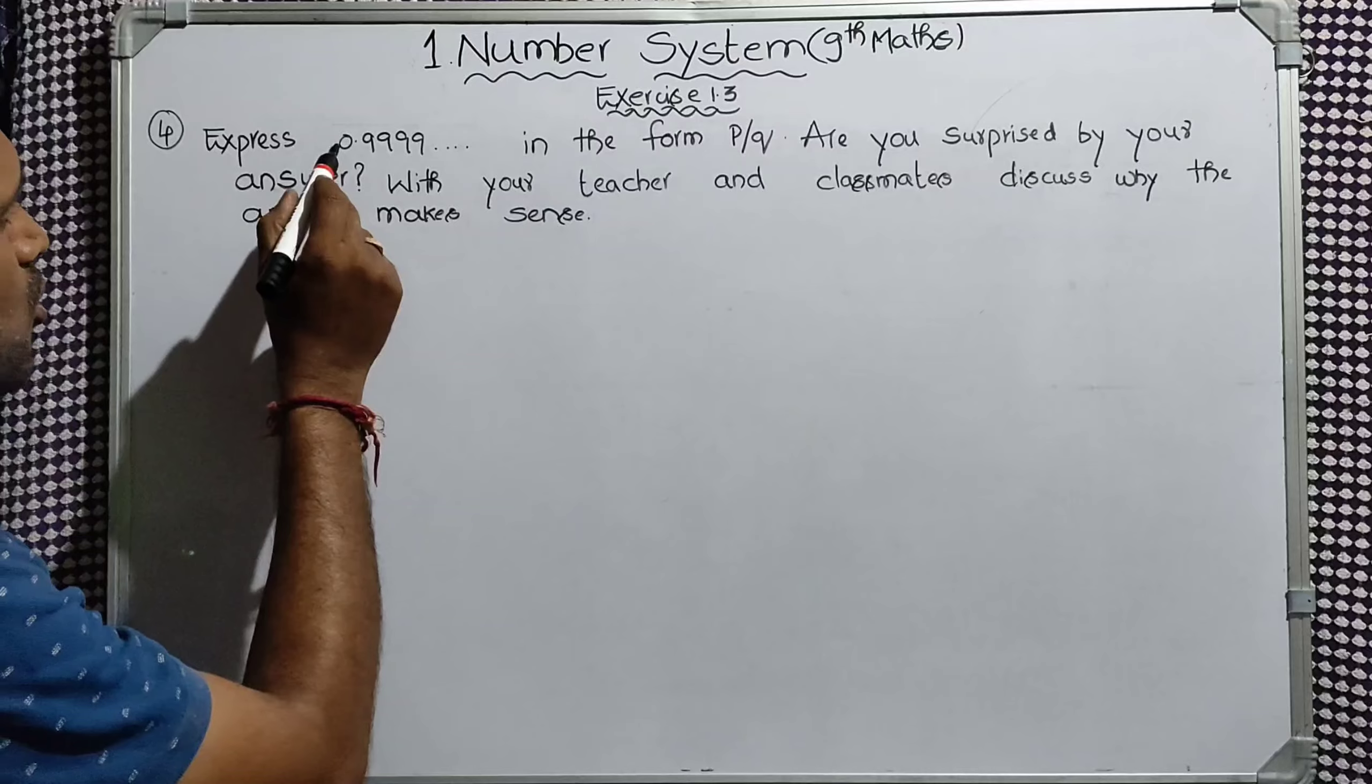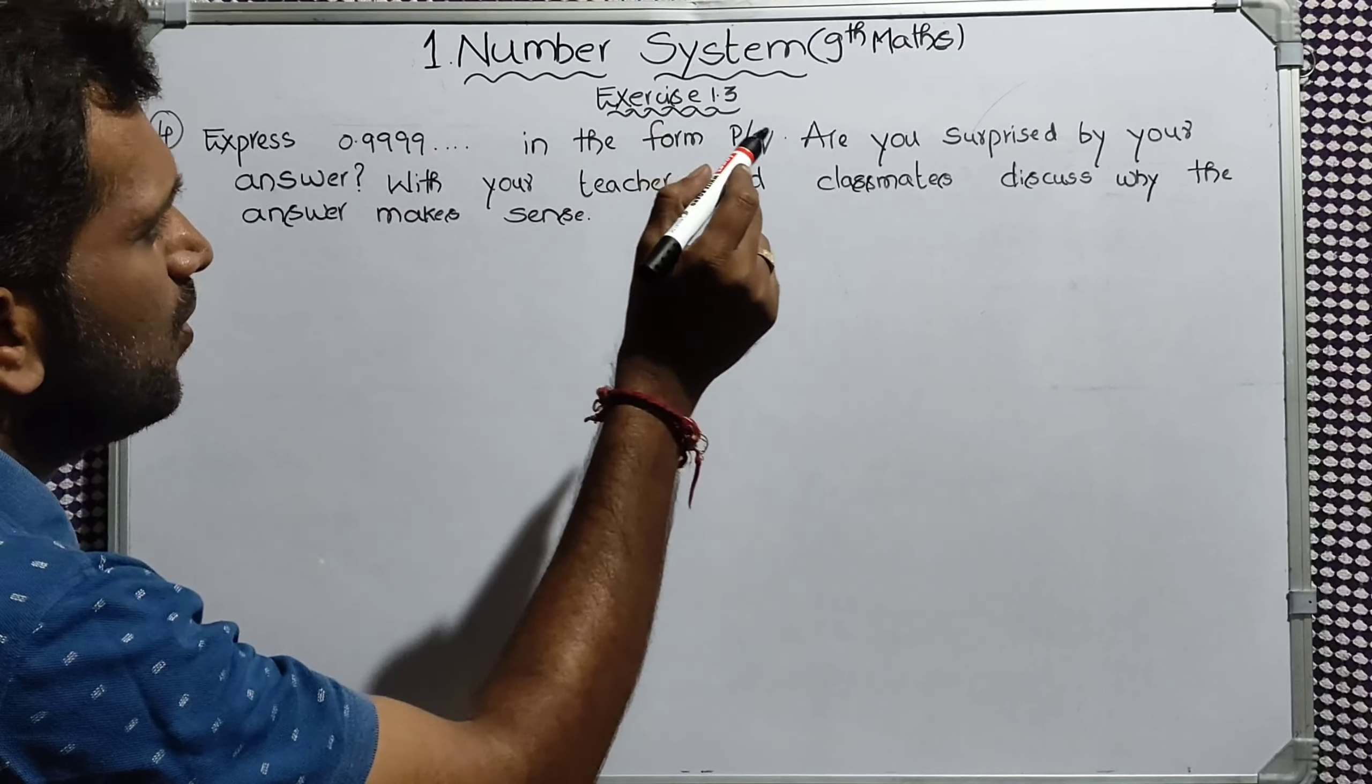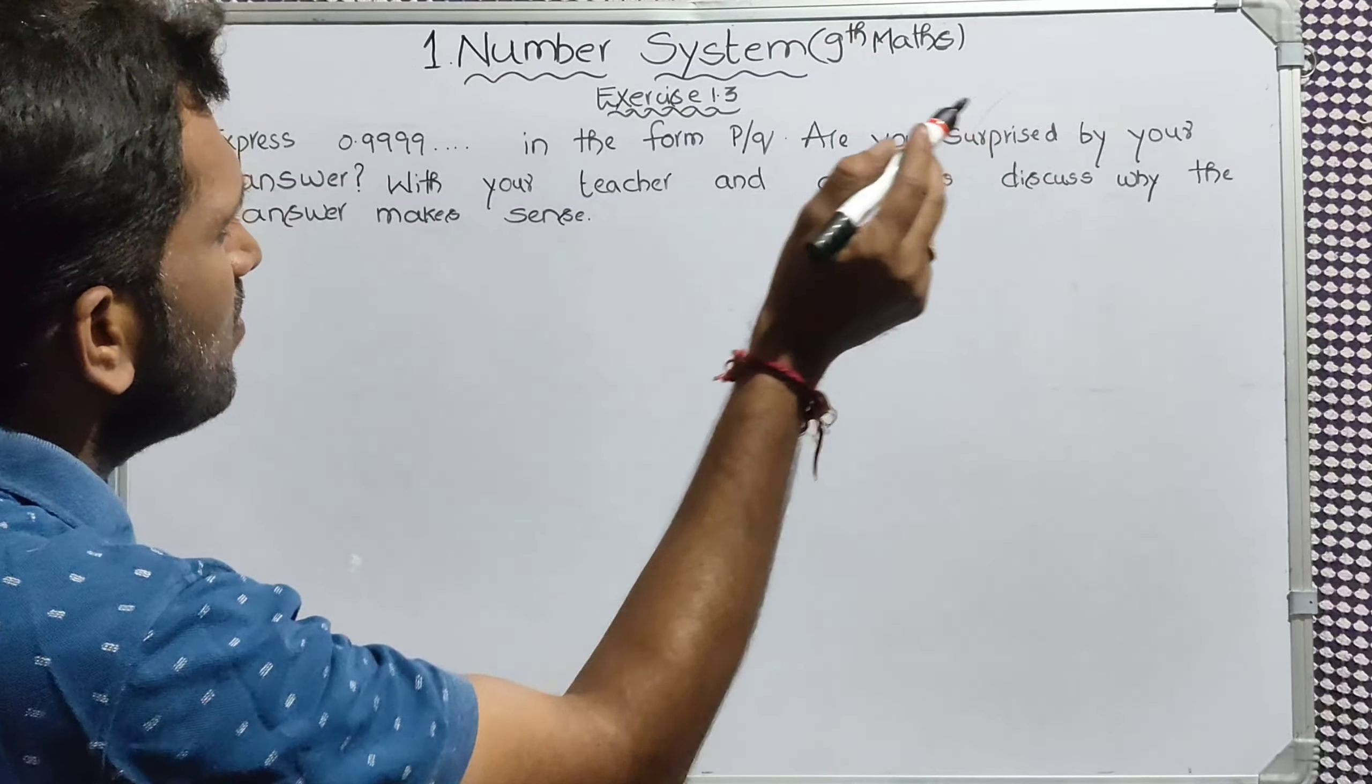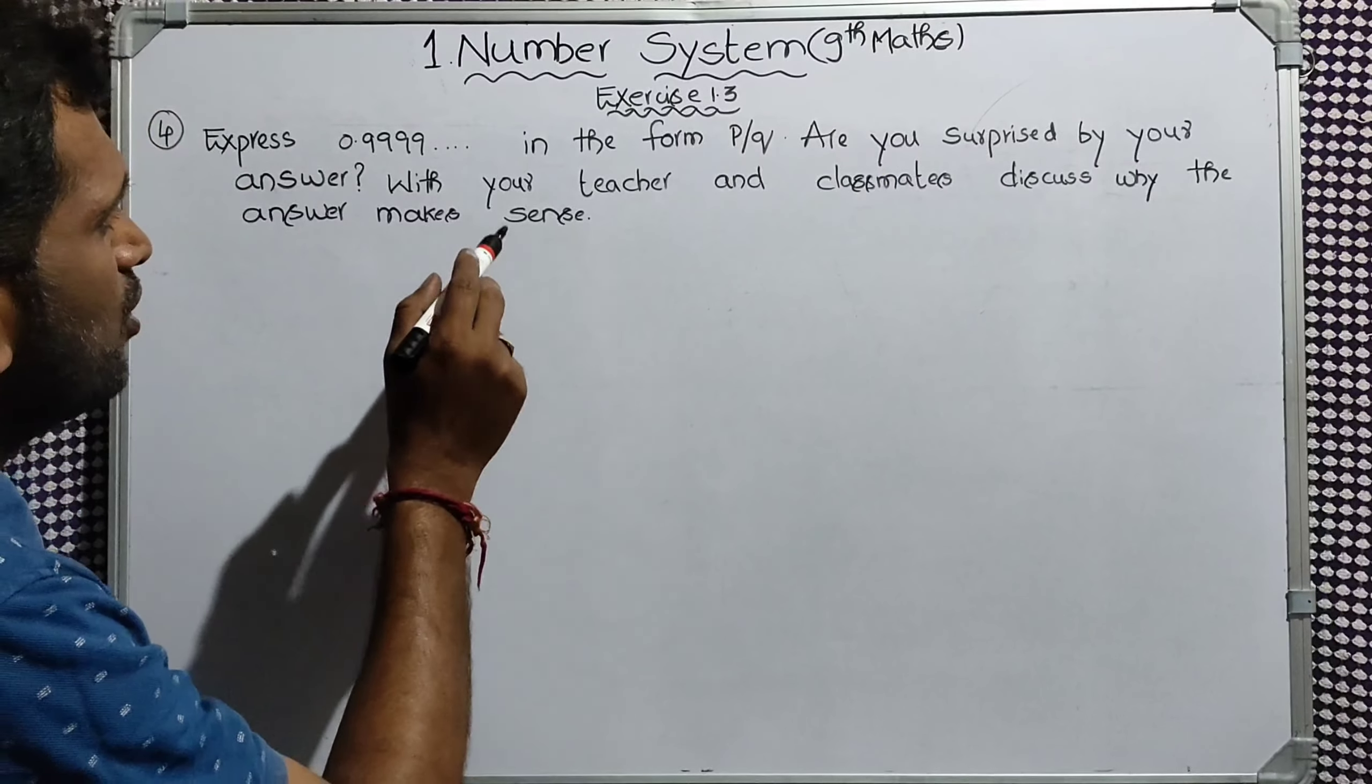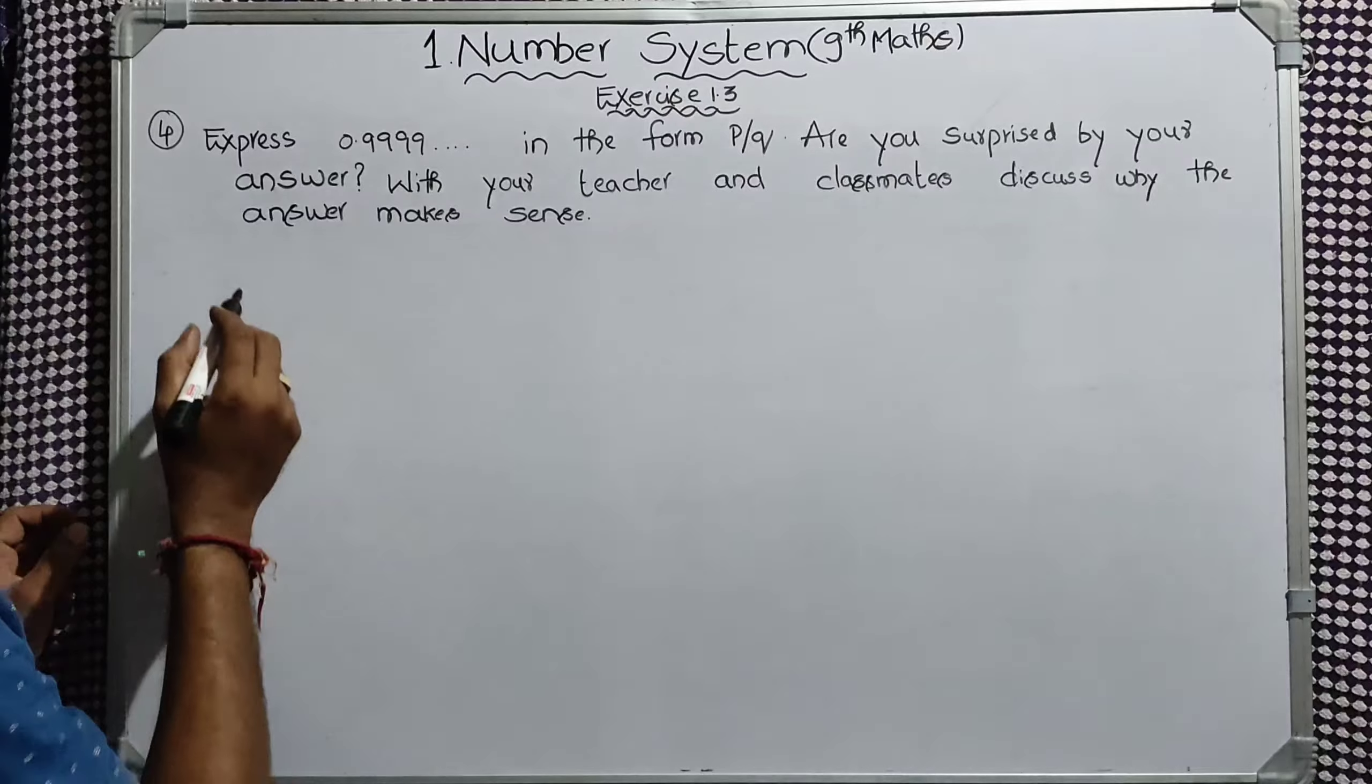Express 0.9999 and so on in the form P by Q. Are you surprised by your answer? With your teacher and classmates, discuss why the answer makes sense. This is the fourth problem.